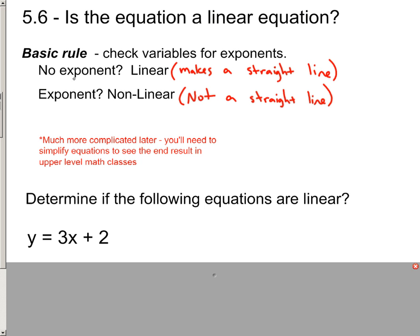So if you see any exponent sitting there on the variables, you would say it's not linear. It's not going to make a straight line. If you look at it and you go, let's see, here's the y, no exponent. Here's the x, no exponent. You'd say it's linear. And that's all that we have to do to determine this.